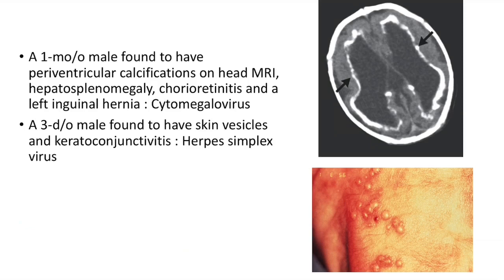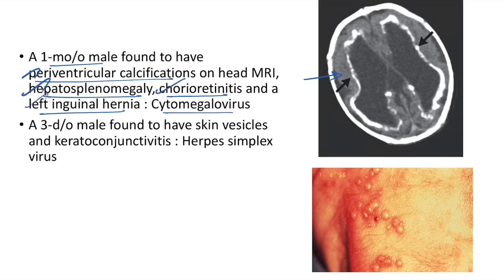Case: 1-month-old male found to have periventricular calcifications, hepatosplenomegaly, chorioretinitis, and a left inguinal hernia — congenital cytomegalovirus infection. In congenital CMV infection there will be periventricular calcifications, hepatosplenomegaly, and chorioretinitis. It is associated with an increased risk of inguinal hernia.